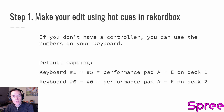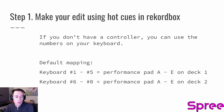The first step is we're going to make our edits using hot cues in Rekordbox to outline what we want to do. If you don't have a controller, you can use the numbers on your keyboard as effectively a performance pad. Keyboard numbers one through five are performance pad A through E on deck one, and keyboard numbers six through zero are performance pad A through E on deck two. Let's get started.